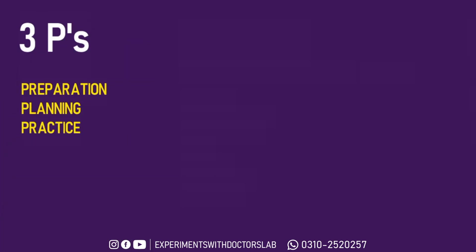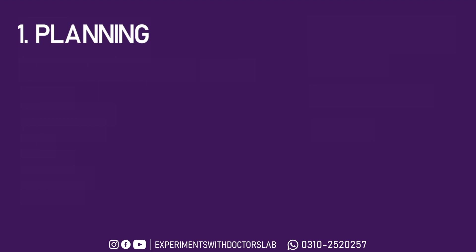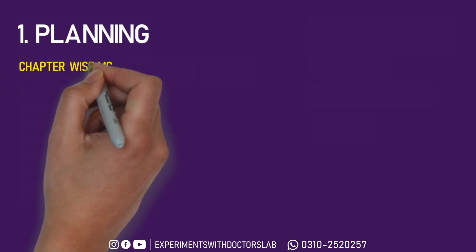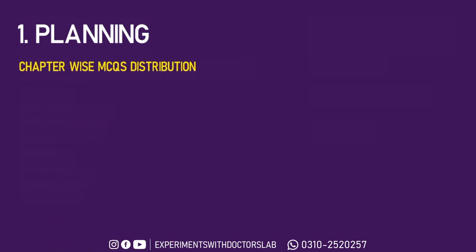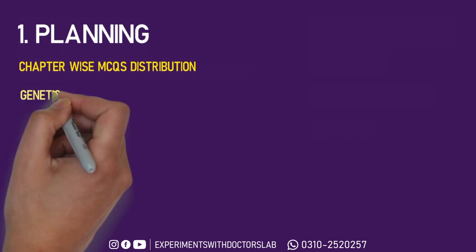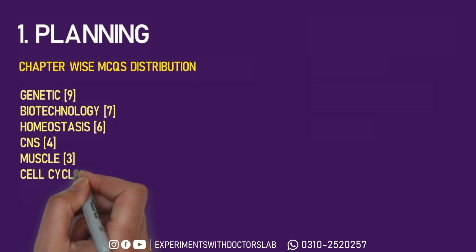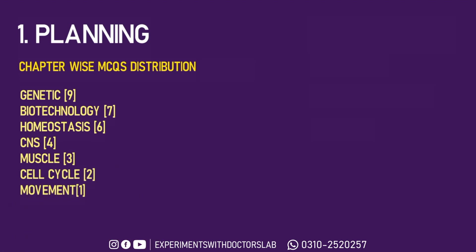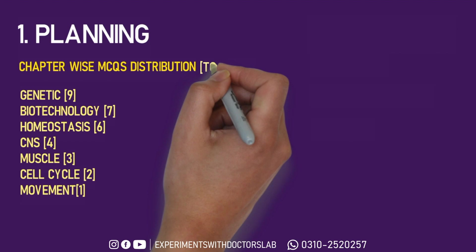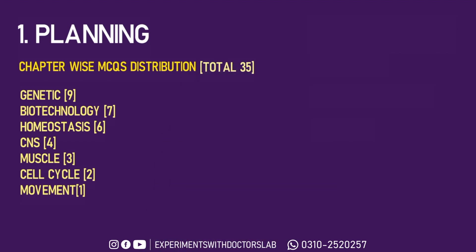You will focus on three pieces which are preparation, planning, and practice. Number 1 is planning, for which you should know the chapter-wise distribution of MCQs. Genetics is 9, Biology is 7, Homeostasis is 6, CNS is 4, Muscles is 3, Cell Cycles is 2, and Movement is 1. That means Biology Book 2 has a total of 35 MCQs expected in your NMDCAT examination.